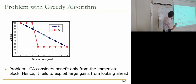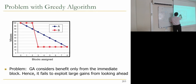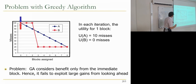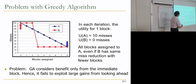Here's an example of pathological behavior: the greedy algorithm considers only the benefit from the immediate next block and doesn't look ahead. If one application has a curve that gets a lot of benefit from three ways but not much from the next way, the greedy algorithm gives one block at a time to application A because A has 10-miss utility while B has zero. It keeps giving all blocks to A until all ways are exhausted, even though B achieves the same miss reduction with fewer blocks.